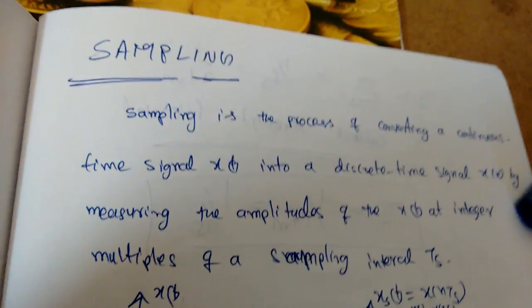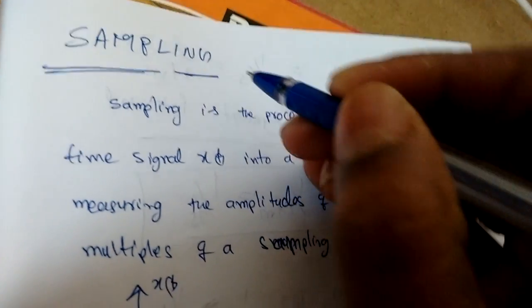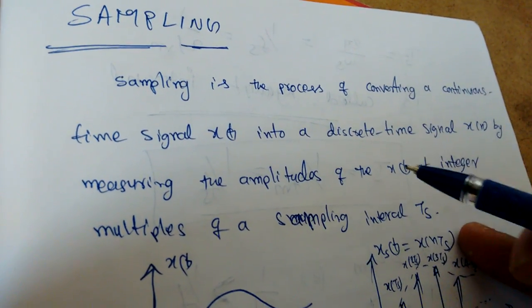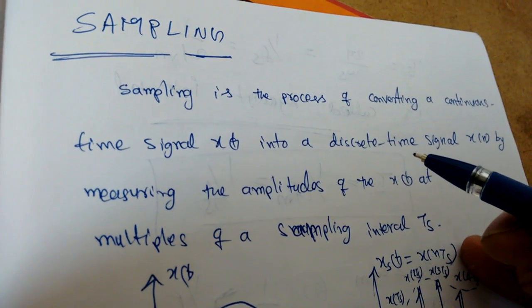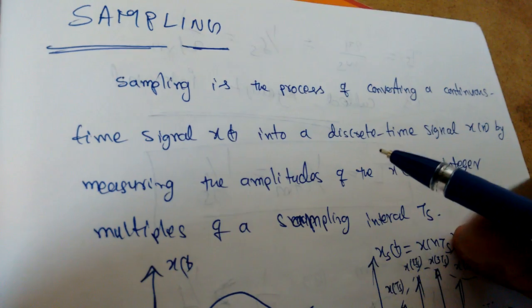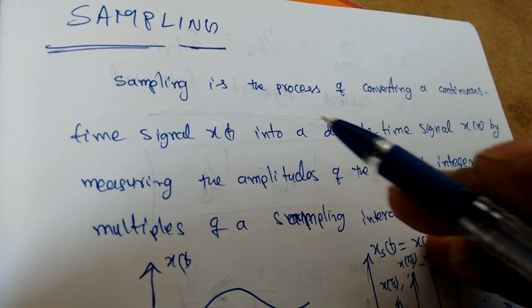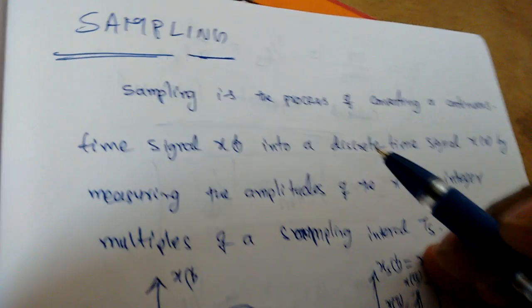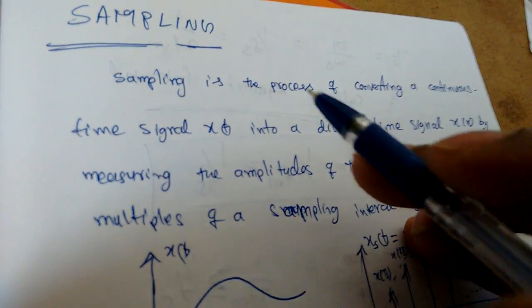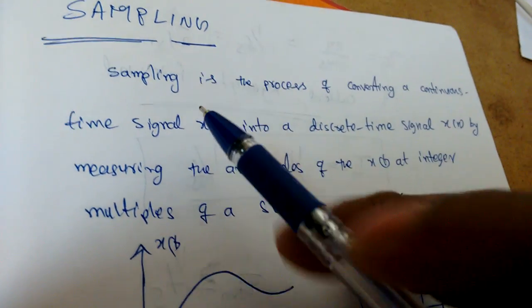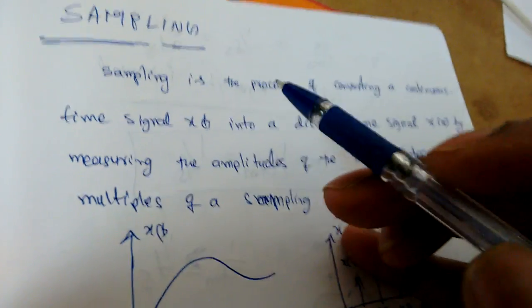In this video, we are going to discuss the simple concept of sampling, or the sampling theorem. Using the sampling theorem, if you see previous gate questions, sometimes they will ask what is the Nyquist rate, or to avoid an aliasing effect, what sampling rate should be used. So we may get questions from the sampling theorem. It is very easy to solve those kinds of problems. First, we will see what we mean by sampling.